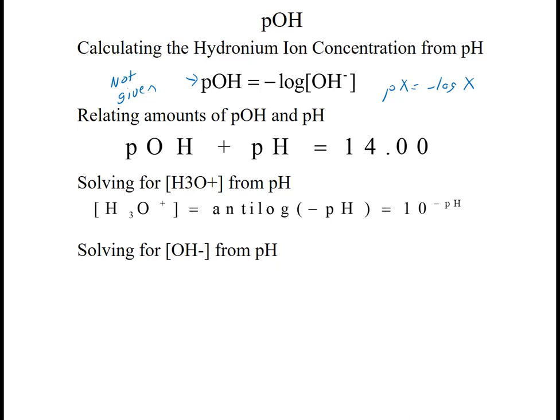So this comes from the Kw expression. And the Kw expression is the hydronium ion concentration times the hydroxide ion concentration. So if I take the negative log of both sides, so I have, before I do that, 10 to the minus 14 is equal to H3O+ times OH-. And so if I take the negative log of 1 times 10 to the minus 14 is negative log of H3O+ times OH-.